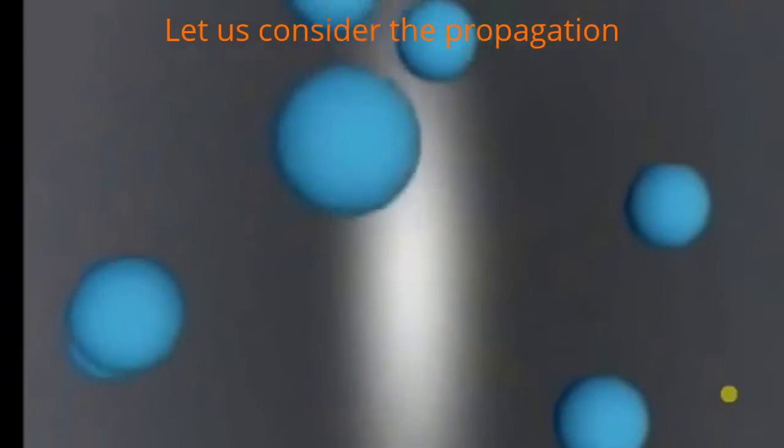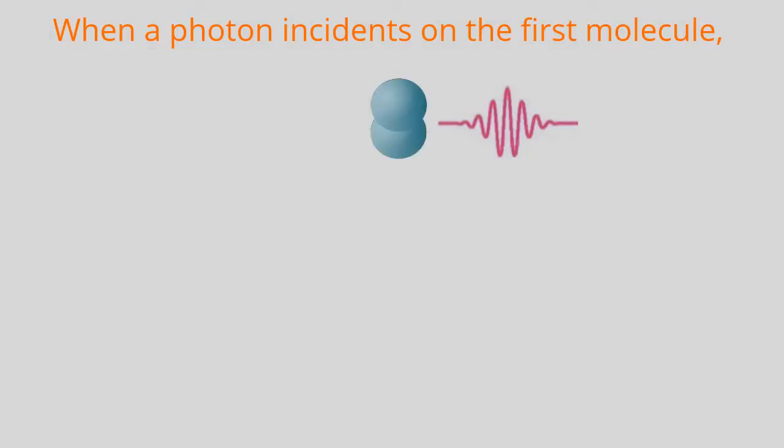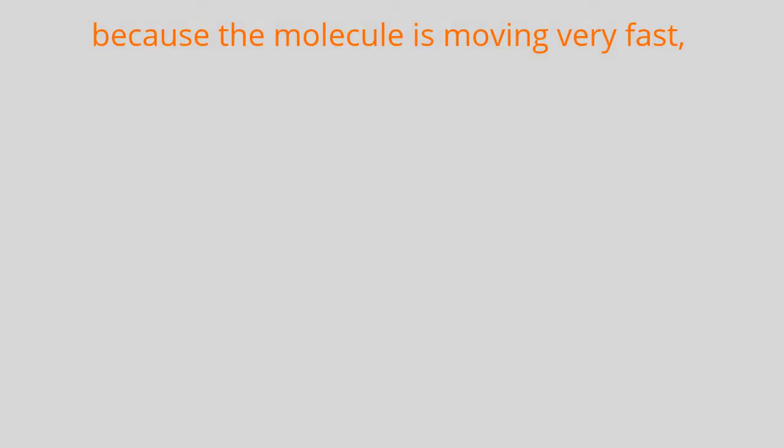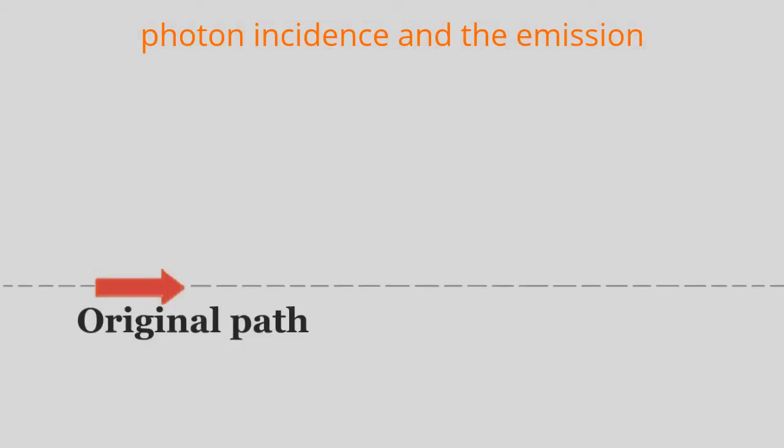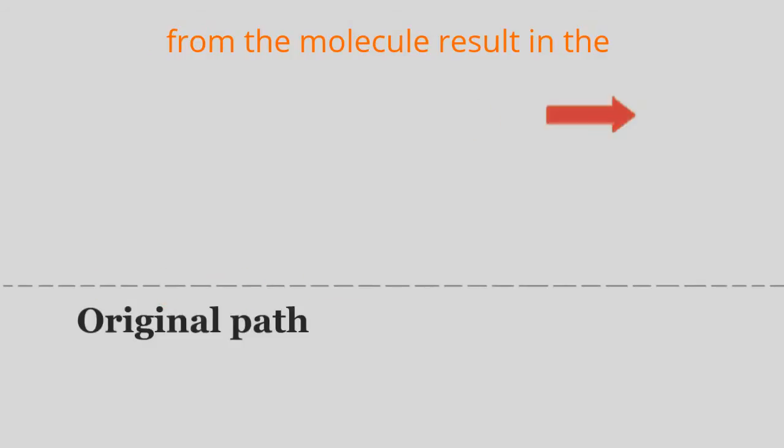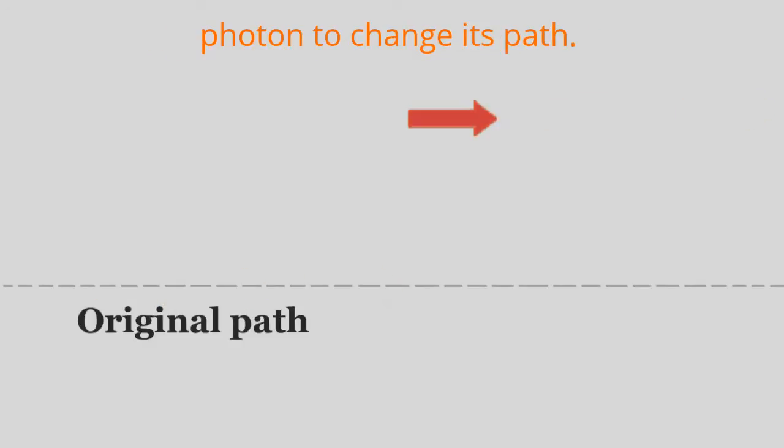Let us consider the propagation of light through a gas. When a photon incidents on the first molecule, because the molecule is moving very fast, the time lag that occurs between the photon incidence and the emission from the molecule results in the photon changing its path.